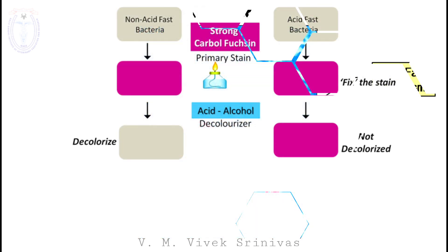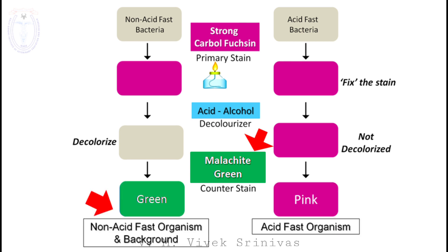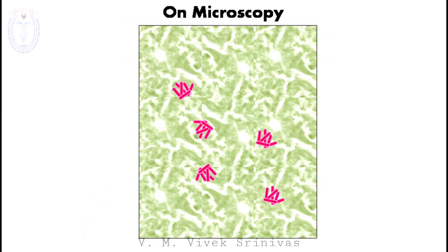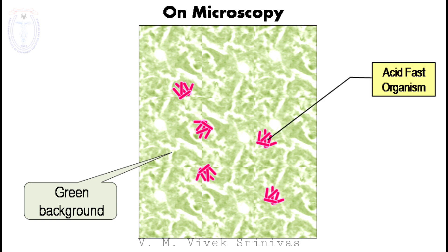But on use of the counter stain — the malachite green staining solution — that gives green color to the non acid fast bacteria and to the background. In that case, on microscopy, the background appears green and the acid fast bacteria stain pink.